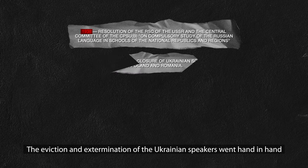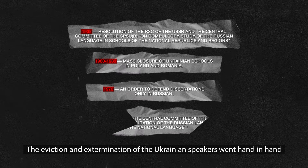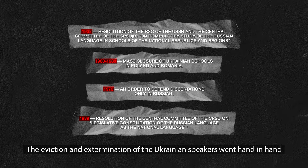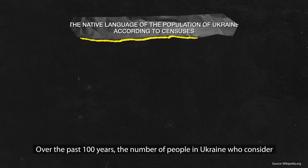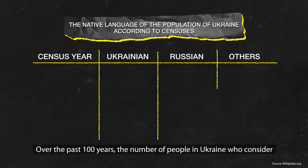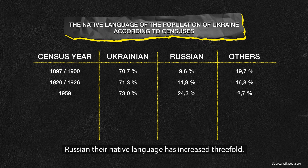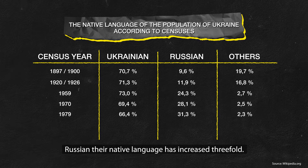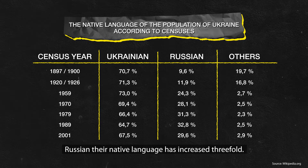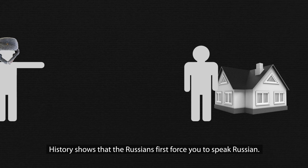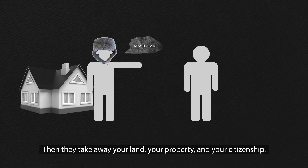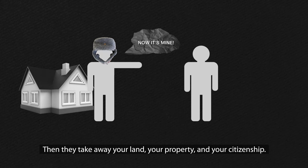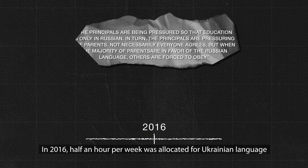The eviction and extermination of Ukrainian speakers went hand-in-hand with the Russification of education. Over the past 100 years, the number of people in Ukraine who consider Russian their native language has increased threefold. History shows that the Russians first force you to speak Russian — then they take away your land, your property, and your citizenship.